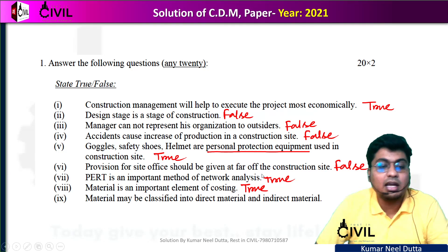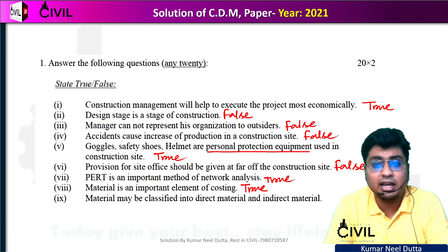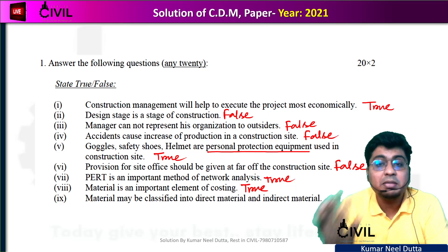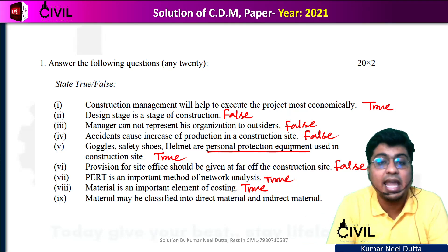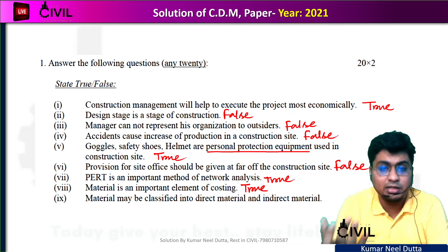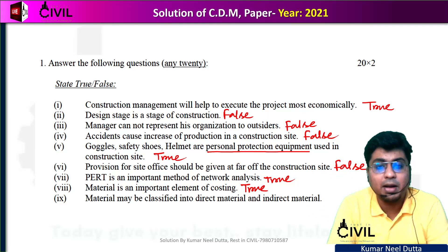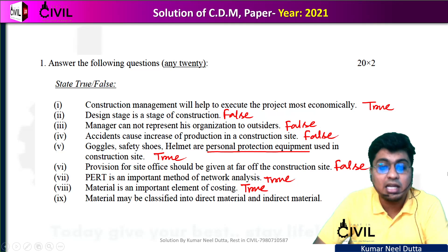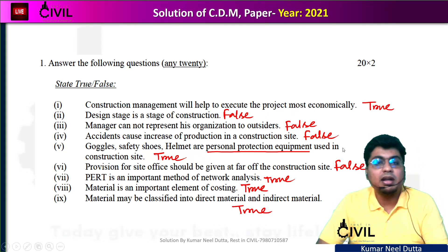The last true/false is number 9: material can be classified into direct material and indirect material. Yes, material can be classified this way. Direct material can be classified as cement products. Indirect material includes raw materials like lime or clinker that become part of the final product indirectly. So this is true.